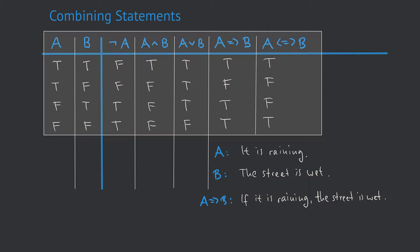Truth tables can also be used for something else. The combination of statements can be iterated — meaning we can successively combine different statements, and we can also combine combined statements, producing very complex expressions of logical statements whose truth values still depend on the underlying original statements, in this case A and B. If we want to understand the values our complex statement takes for all combinations of A and B, we can also use a truth table.